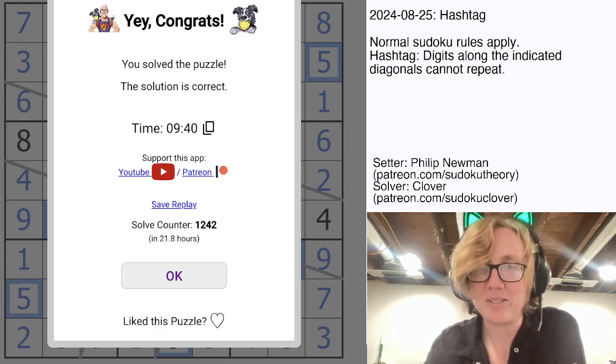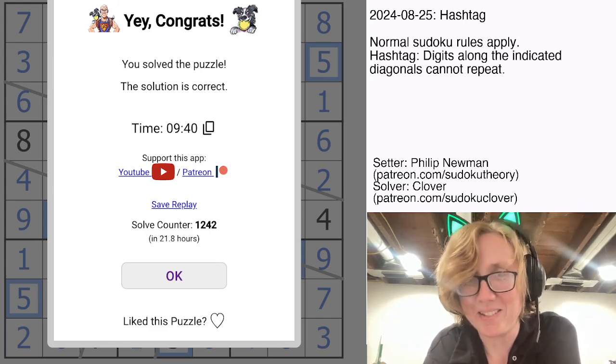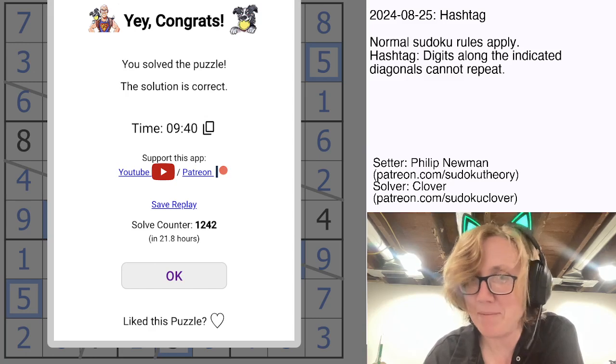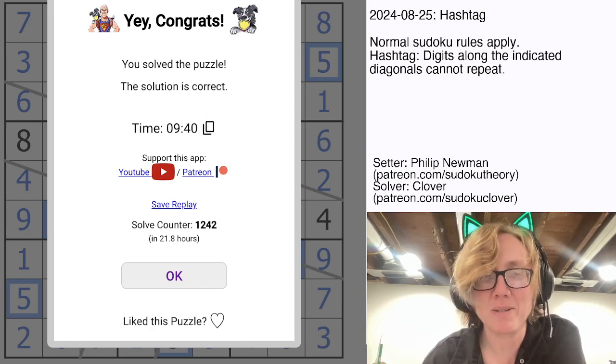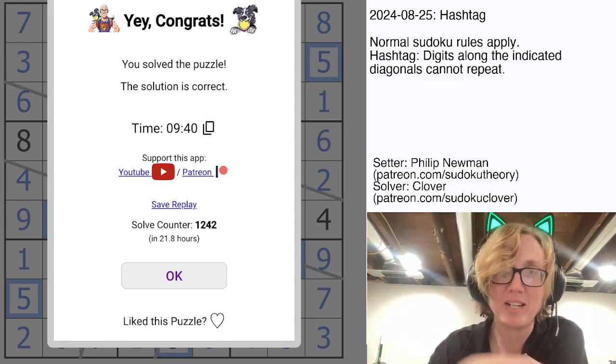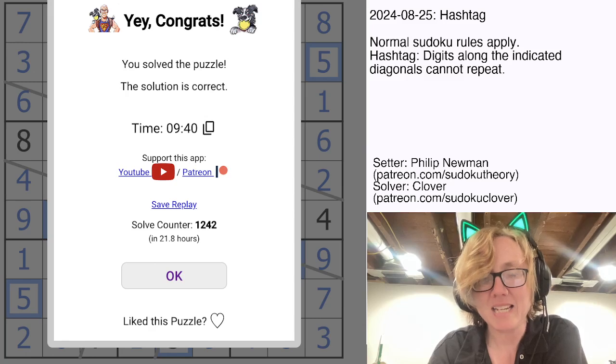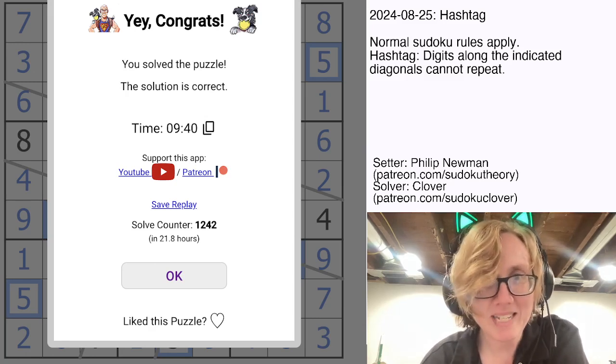And that is how you solve, though, that was a little bit of a clumsy solve, and I do apologize for that. I hope that you still got some information out of that. But that is how you solve Philip Newman's hashtag Sudoku from August 25th. If you enjoyed that, try it yourself in the description below this video. And I will see you again in three days' time.